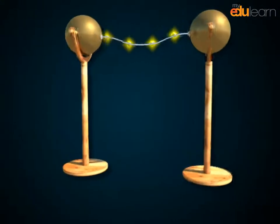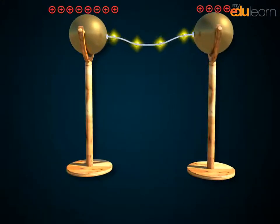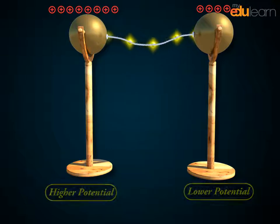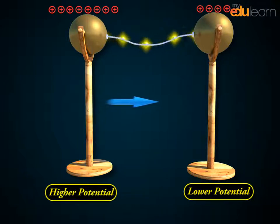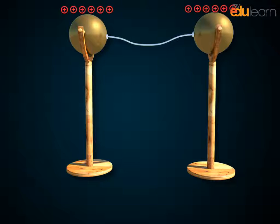It determines the direction of flow of charges between two charged bodies placed in contact with each other. The charges will always flow from a body at higher potential to the body at lower potential. The flow will stop as soon as the potential of both bodies become equal.